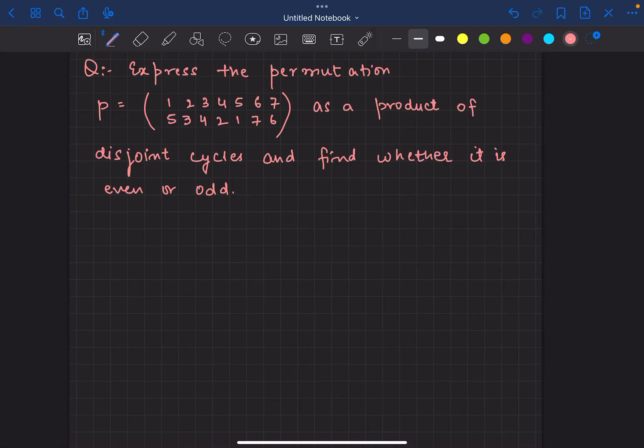Hello everyone, today we'll be doing this question. The question is: express this permutation as a product of disjoint cycles and then find whether it is even or odd. So what are disjoint cycles?